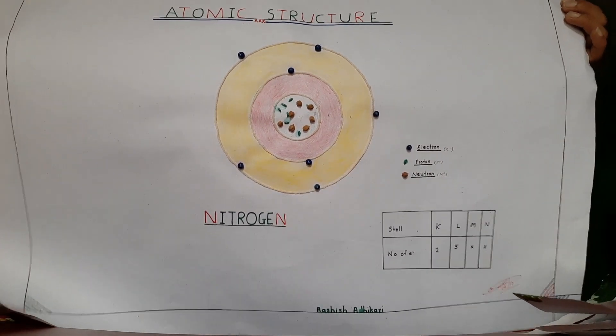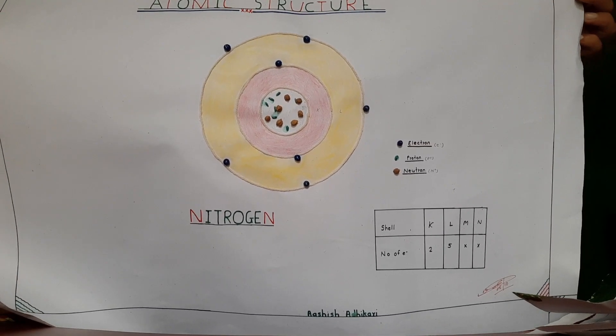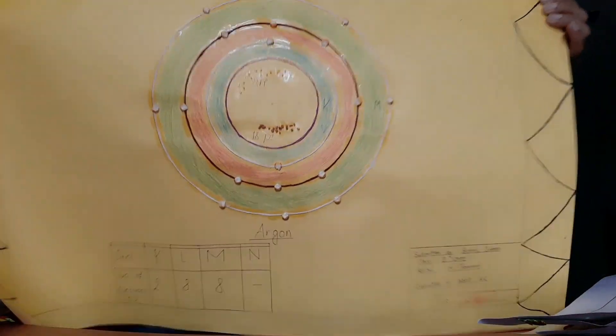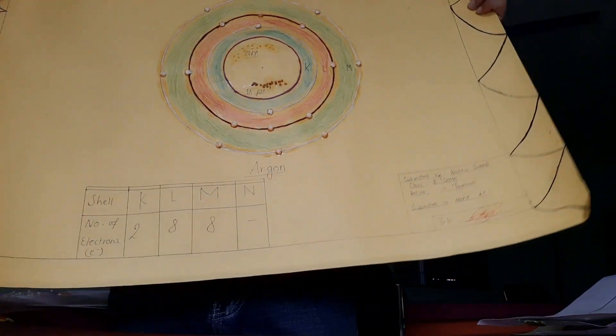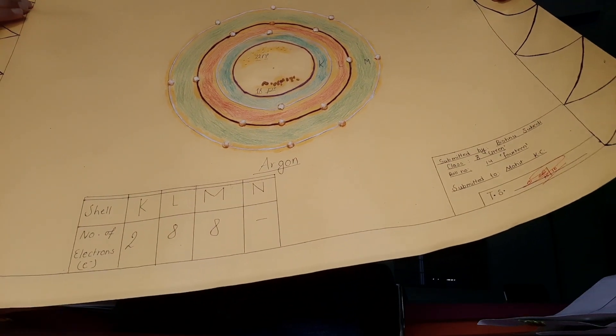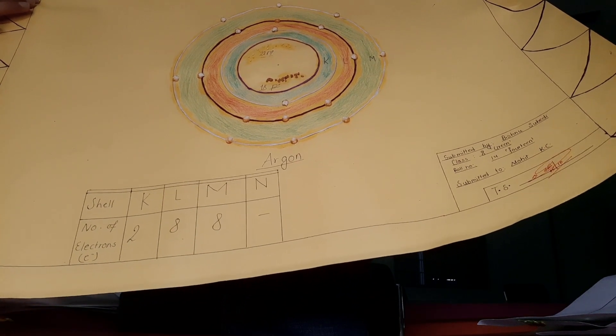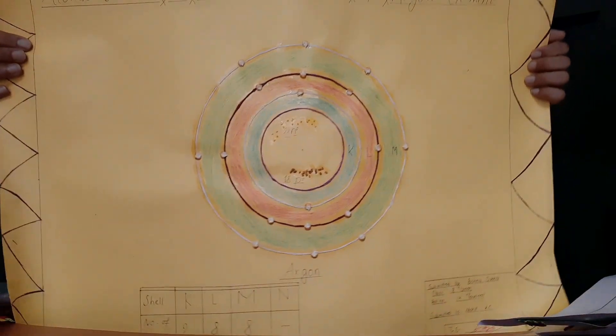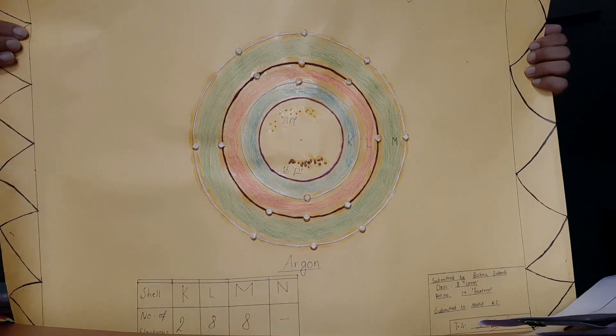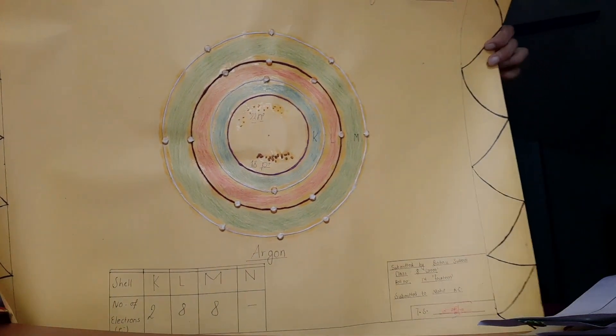You can see this atomic model is beautiful and clear. The next project is by Vishnu Subedi. He has used thread, maize, and grains to make this project work. You can see how much effort he has given.